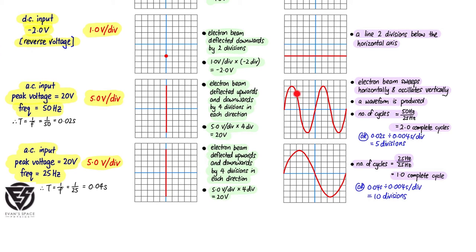We need to understand how many divisions one complete wave will occupy. With the time base setting at 0.004 seconds per division and the source period at 0.02 seconds, dividing 0.02 by 0.004 gives five divisions per complete wave. That's why there are five small squares per wave, and two complete waves are visible on the screen.